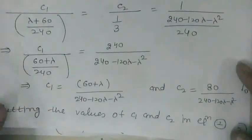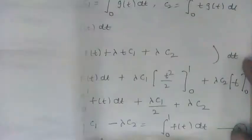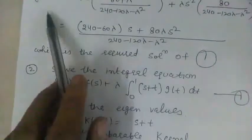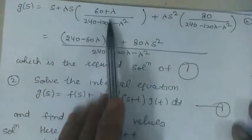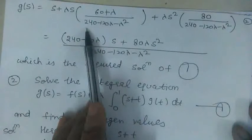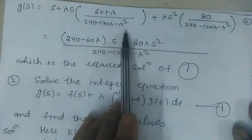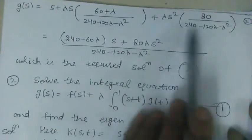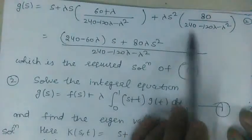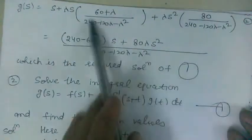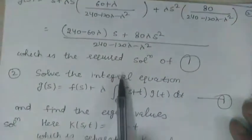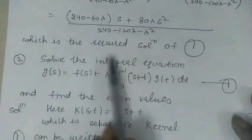Now substituting the values of c₁ and c₂ into equation 2, we obtain the solution: g(s) = s + λs · (60 + λ)/(240 − 120λ − λ²) + λs² · 80/(240 − 120λ − λ²). After simplifying, this gives the required solution of the Fredholm integral equation of second kind.